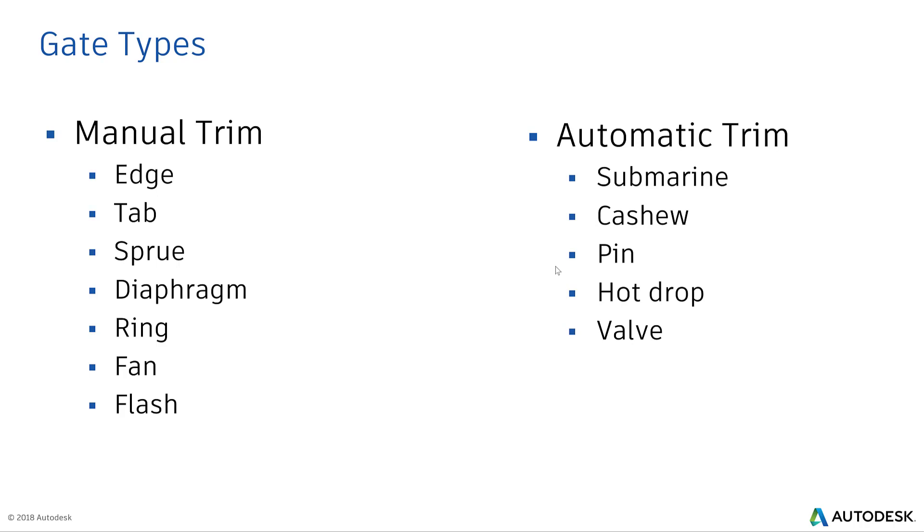These are particularly in the thickness range of 100% all the way to 120% of the product wall thickness. Automatic gates are designed with a specific purpose in mind and they are a little difficult to machine as well.